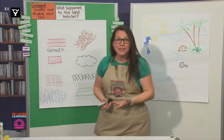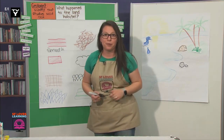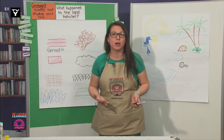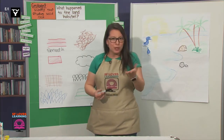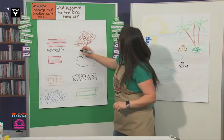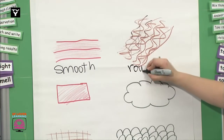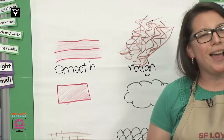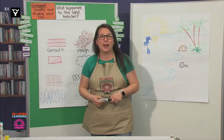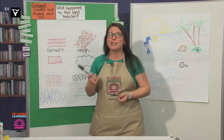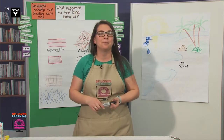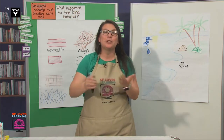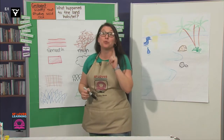The opposite of smooth is rough. An example of a rough texture is tree bark. What other things can you think of that are rough? Yeah, sandpaper is rough — interesting that it has sand in the name. And somebody else said a nail file; those are emery boards, and those are really rough.